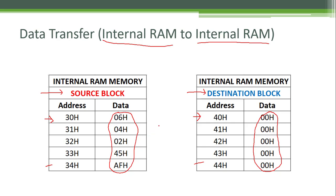Before moving ahead, I will explain the logic for this program. Whenever we want to transfer data from one memory location to another, we have different types of instructions. Since we are copying data from sequential memory locations in RAM to another sequential location in RAM, it is better to use pointers. We will use the r0 pointer to point to the source addresses and the r1 register to point to the destination addresses.